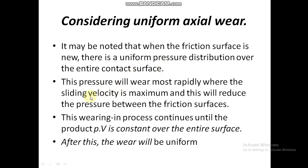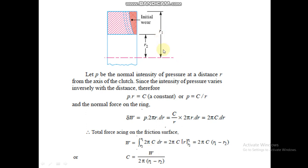The pressure will wear most rapidly where the sliding velocity is maximum, which reduces pressure between the friction surfaces. This process continues until the product pv is constant over the entire surface, after which wear is uniform. Since R1 is larger than R2, the sliding velocity is higher at R1, so the clutch wears at R1 more quickly than at R2. This continues until wear is uniform over the entire surface.